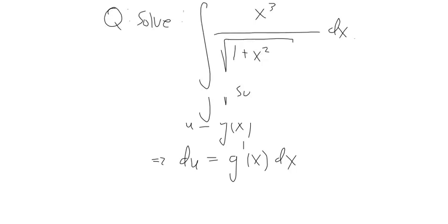To solve this integral, we would have to use U substitution. How do we know what method to use when integrating? Usually a key giveaway that tells you to use U substitution is that you let your U equal to some G of X such that when you take the derivative of that G of X function, that exact derivative shows up somewhere attached to your integral.